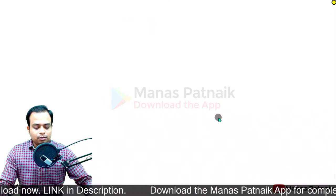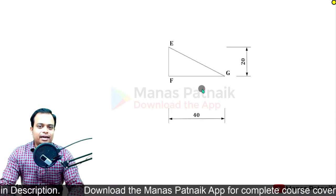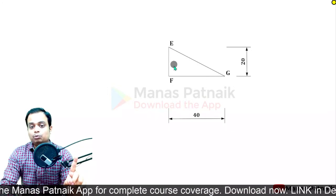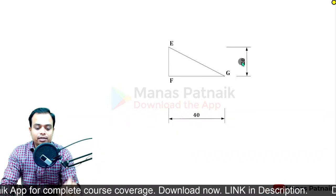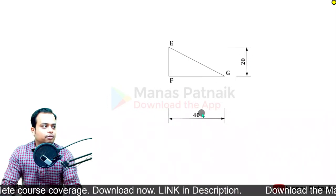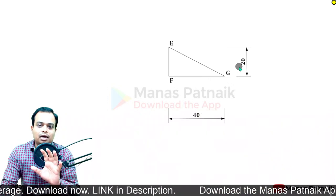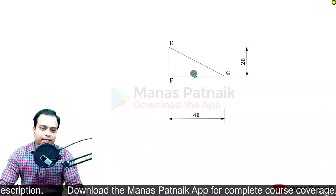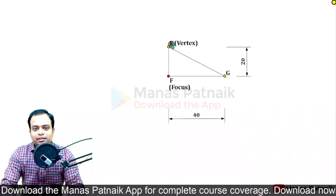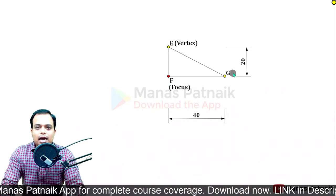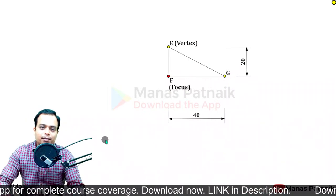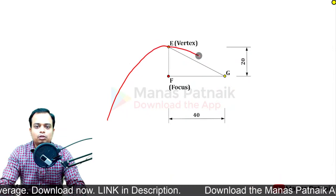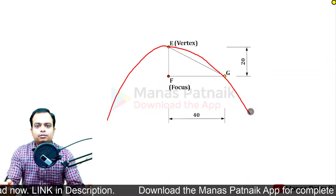The first step is to make a right angle triangle. FE has been given as 20 and FG has been given as 40. Based on this data, I have made this rectangle. Mark E as vertex, F as focus, and G as a point on the parabola. When you make the parabola, it will pass through the vertex and also through point G, as given in the question.